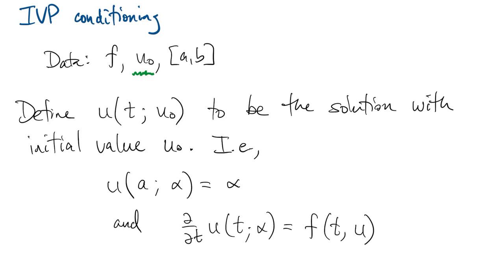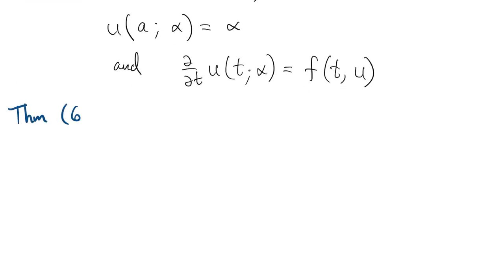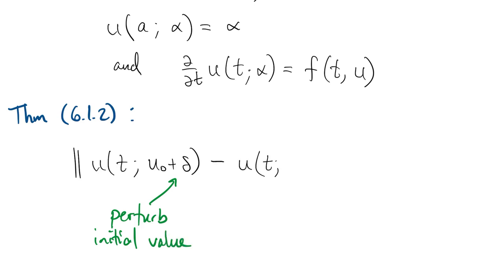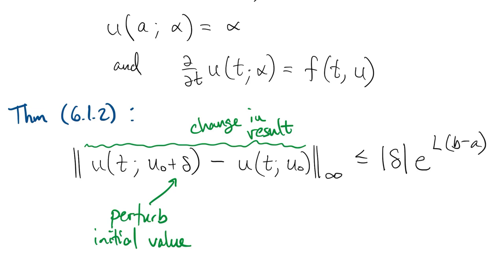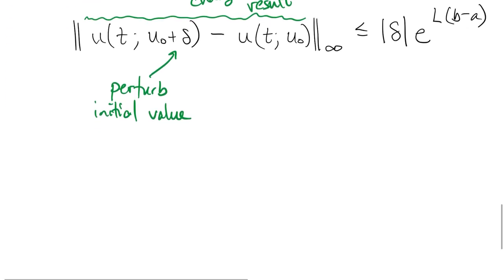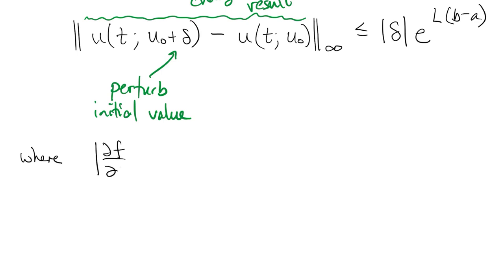A typical result is given in theorem 6.1.2. If we perturb the initial value by delta, and then subtract off the unperturbed solution, what we get is the change in the solution that results from the perturbation. This can be bounded above, in norm, by the magnitude of delta times the exponential of a constant L times B minus A.